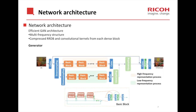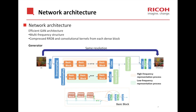In this work, we propose an efficient GAN architecture as our network. It adopts low- and high-frequency representation processes and the compressed Residual-in-Residual Dense Block, or RRDB, which is originally from ESRGAN, and convolutional kernels from each dense block. The network has two down-sampling and two up-sampling layers. The basic blocks are compressed RRDBs modified from ESRGAN. We reduce the number of RRDBs from 23 to 6 and the number of convolutional kernels with Leaky ReLU in each dense block from 5 to 3. We keep the same resolution between input and output for enhancement purposes.